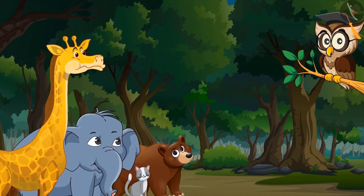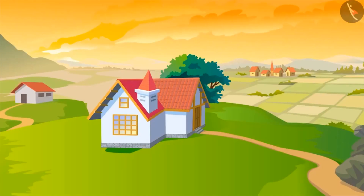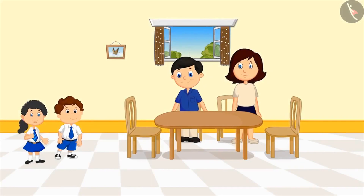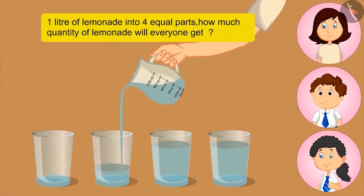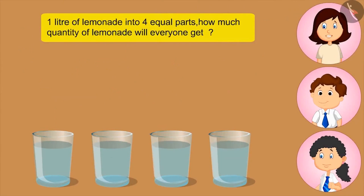Can you give some more examples? Pinky and Bholu live in the village with their parents. They got very thirsty while returning from school. Mom, I am very thirsty. I will make lemonade for everyone. We will also help you. Mother makes 1 liter of lemonade with the help of Bholu and Pinky and fills it in 4 glasses. Now tell me, if I divide 1 liter of lemonade into 4 equal parts, how much lemonade will everyone get? 400 ml.